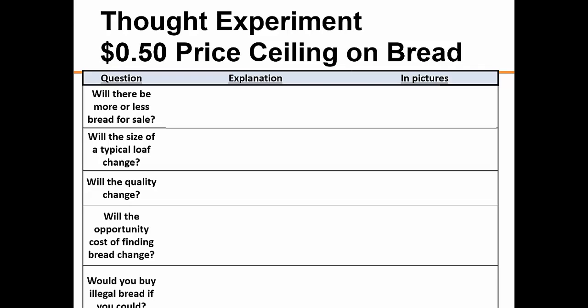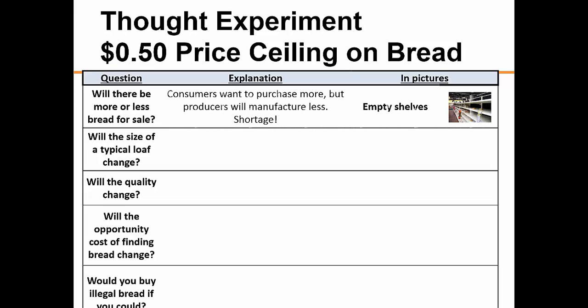What are the logical repercussions? First of all, the law of supply and demand tells us that if price drops, consumers' demand will increase. At the same time, the quantity supplied will fall because producers are receiving lower profits for their efforts. The result will be a shortage of bread.